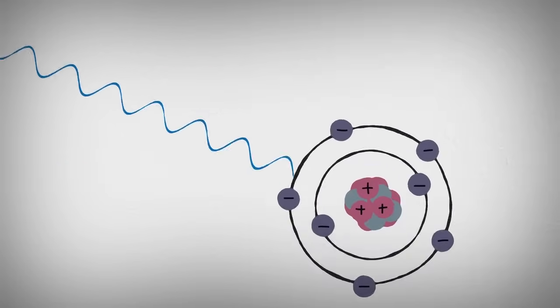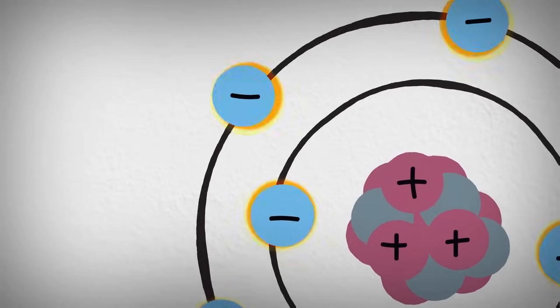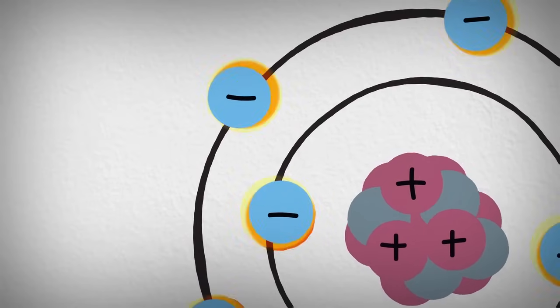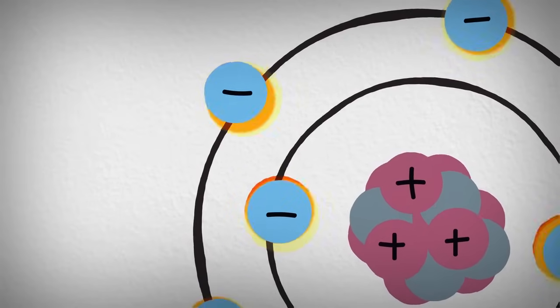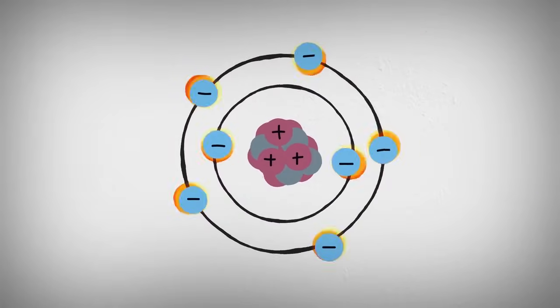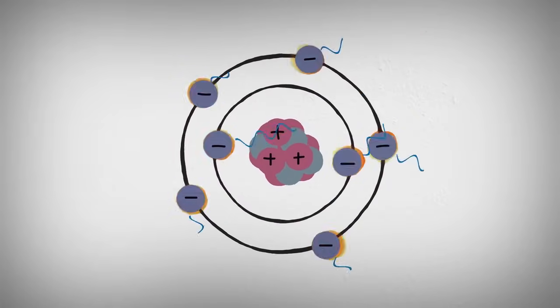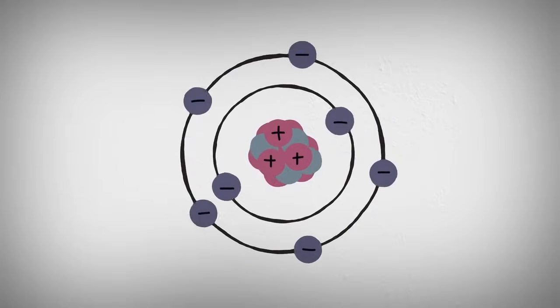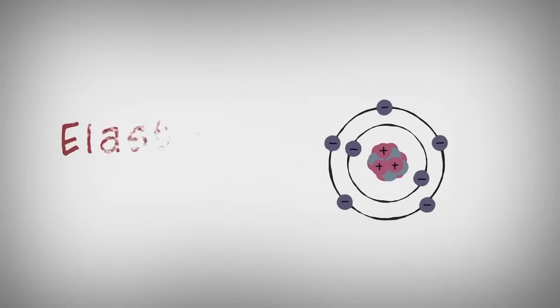When an X-ray encounters an atom, its energy is absorbed by the electrons. Electrons occupy special energy states around an atom. Since this is not enough energy for the electron to be released, the energy must be re-emitted in the form of a new X-ray with the same energy as the original. This process is called elastic scattering.